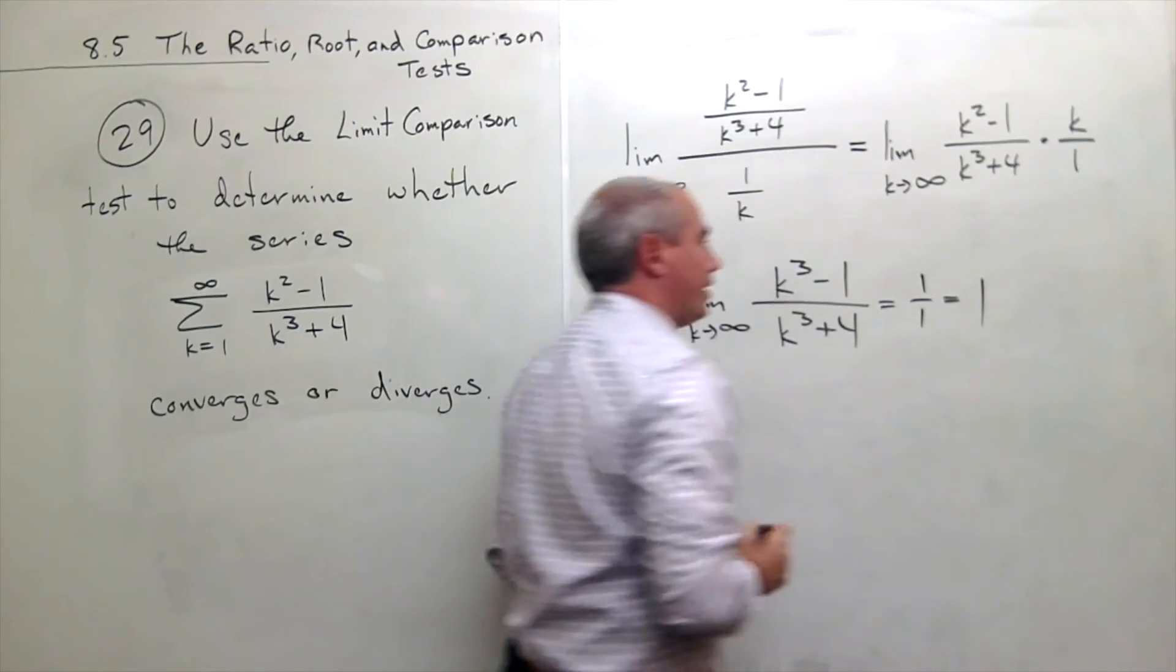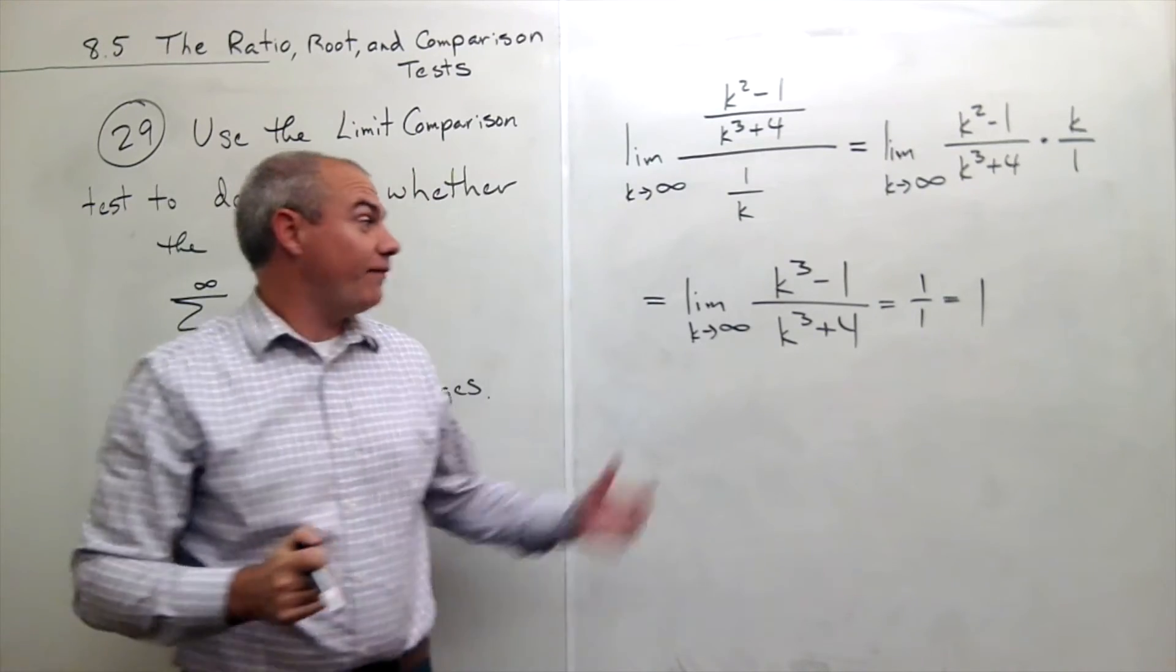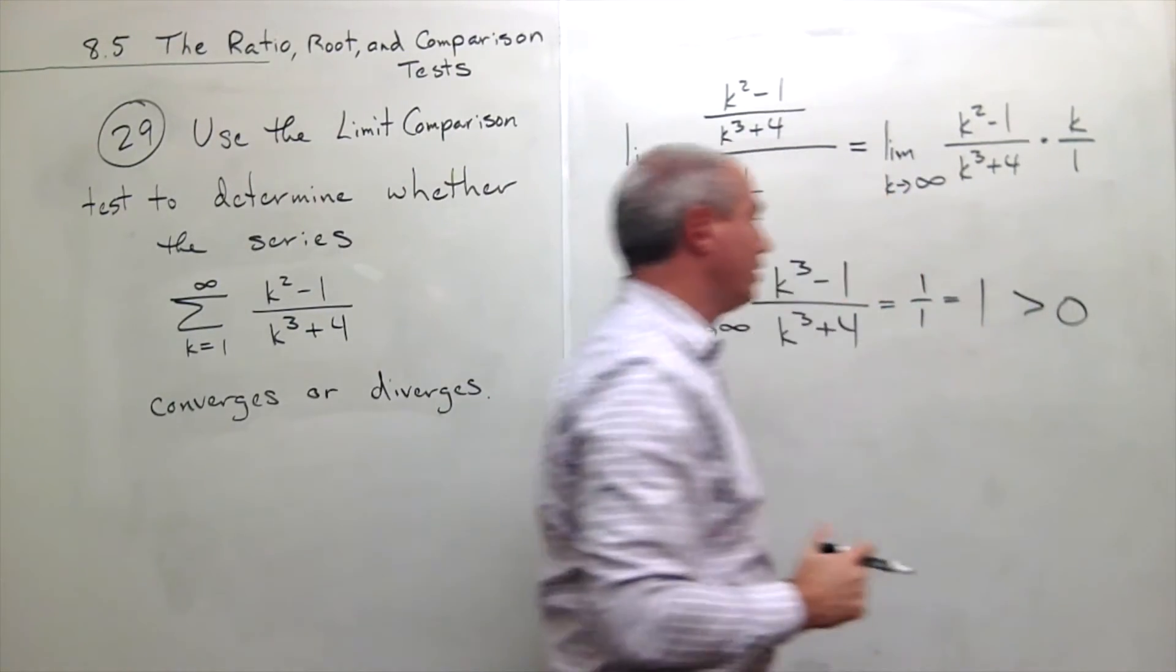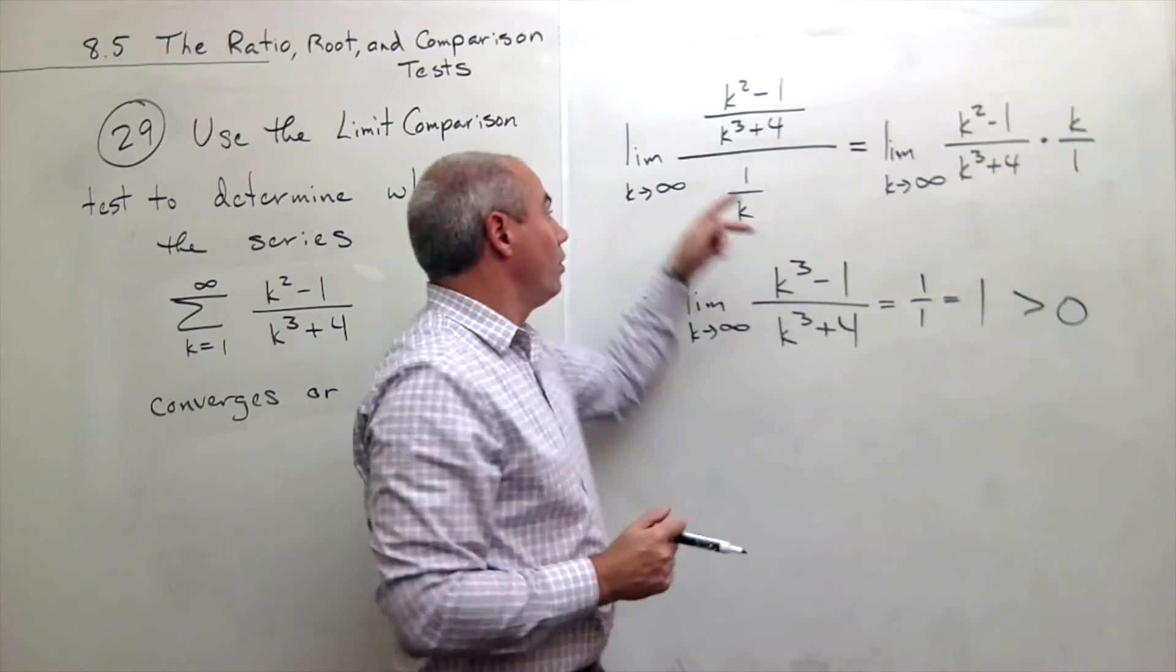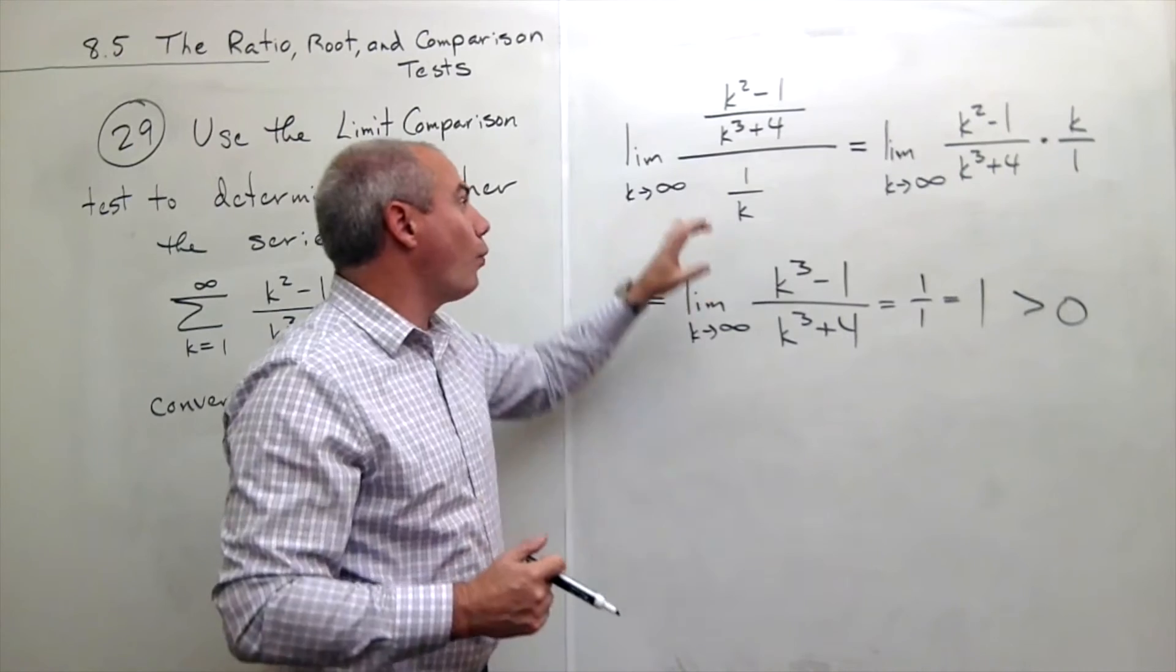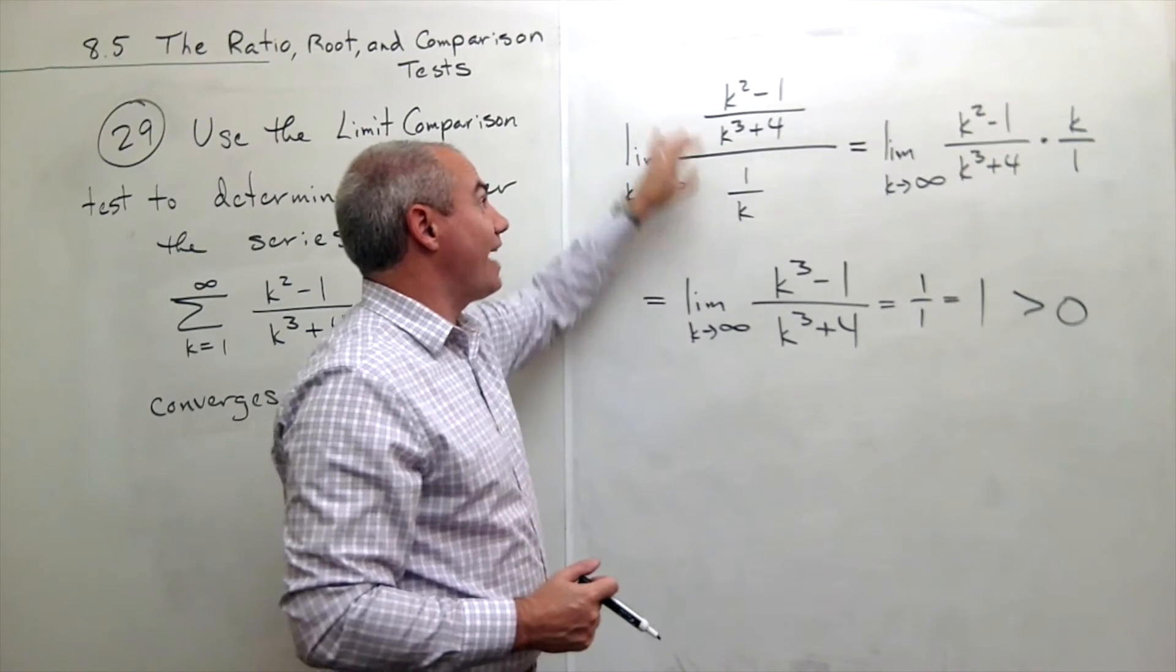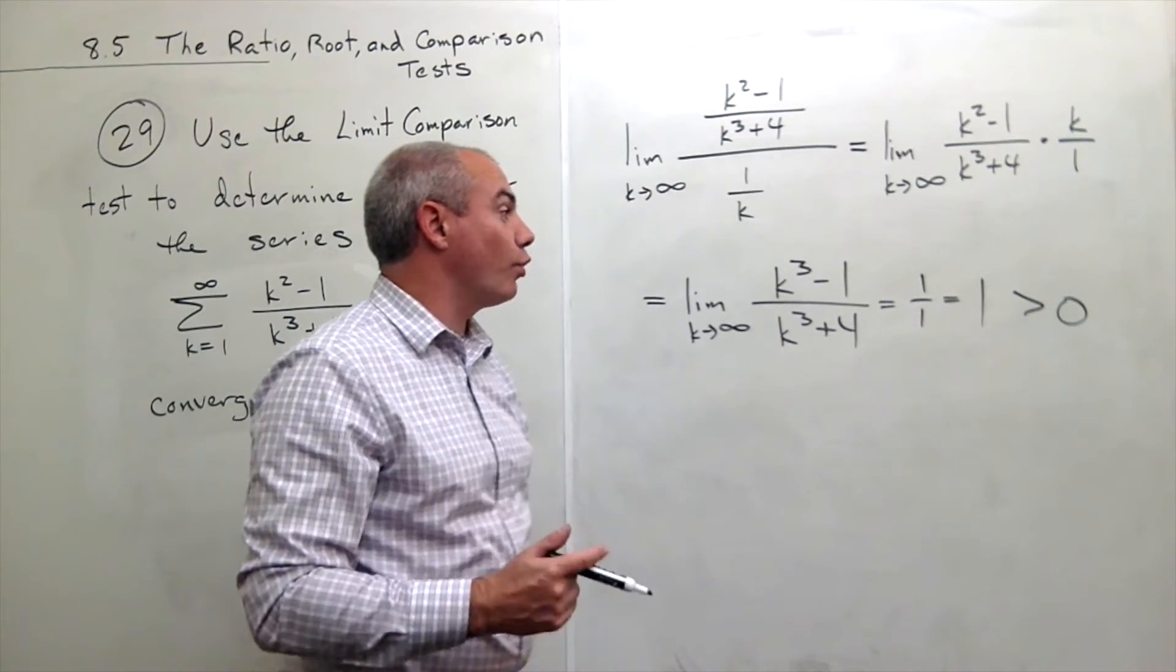Now, for the limit comparison test, if I get some number that's bigger than 0, then the sum of what was on the bottom and the sum of what was on the top, they do the same thing. So now I know whatever it is that the sum of the 1 over k's does, that's what the sum of the k squared minus 1 over k cubed plus 4 does.